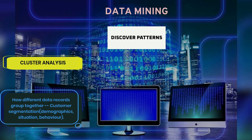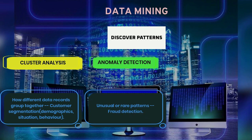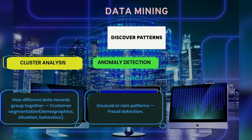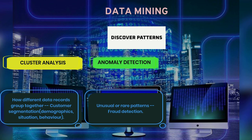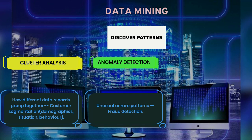A second type of data mining is called anomaly detection, where you're trying to find unusual or rare patterns. One of the most prominent use cases is fraud detection in transactions. Banks love to use this to tell if your credit card number or related information has potentially been compromised. You can imagine using a combination of variables and saying if a person did this and this and this, that would not be in line with what they usually do — so let's flag this.